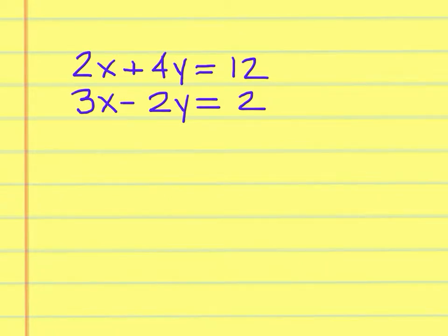To solve this system of linear equations by substitution, you would first want to isolate one of the variables in one of the equations. I'm going to use this one. So it's 2x plus 4y equals 12.